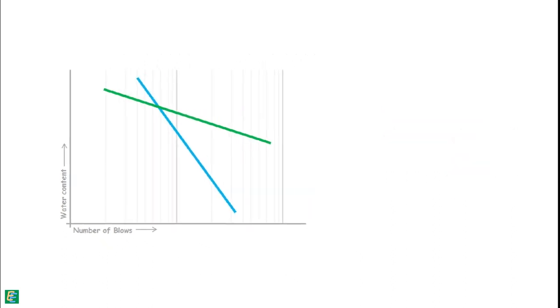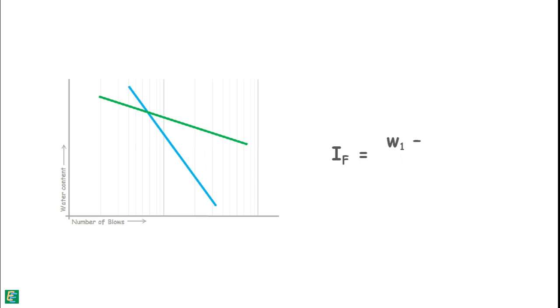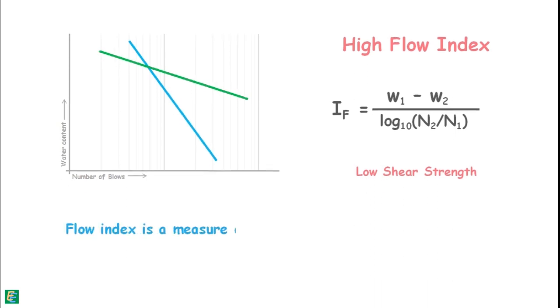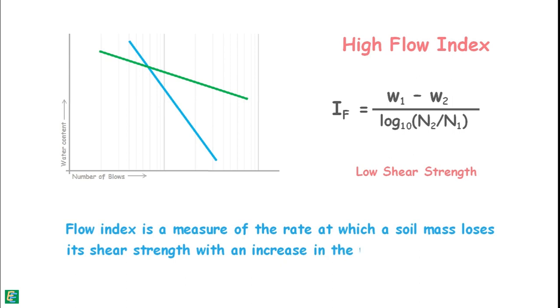Hence, using flow curve and flow index, we say soil having high flow index has low shear strength. Flow index is a measure of rate at which the soil mass loses its shear strength with an increase in the water content.